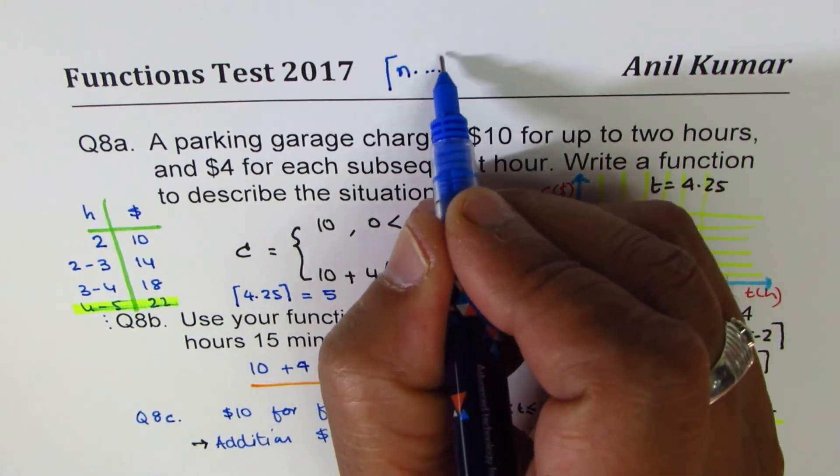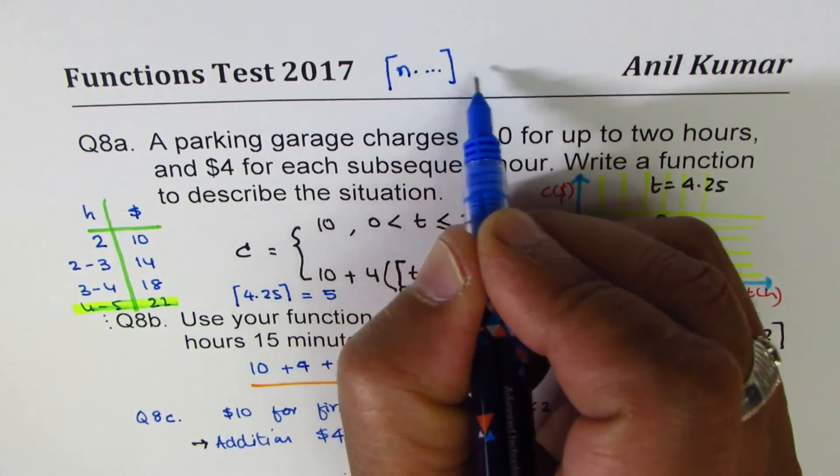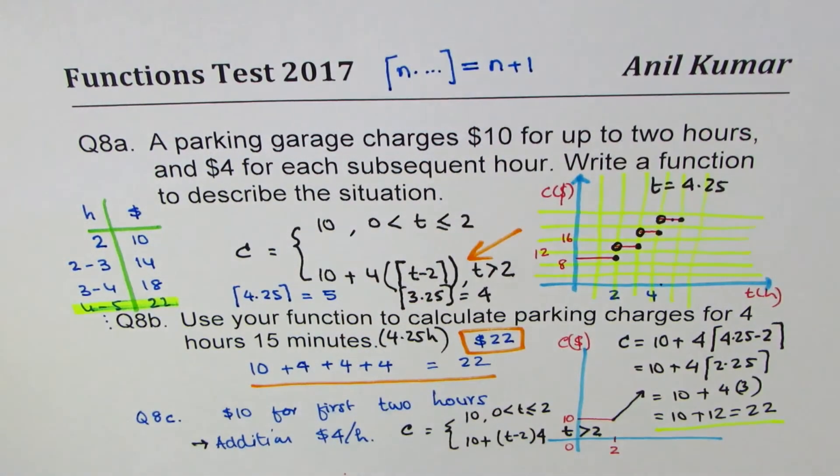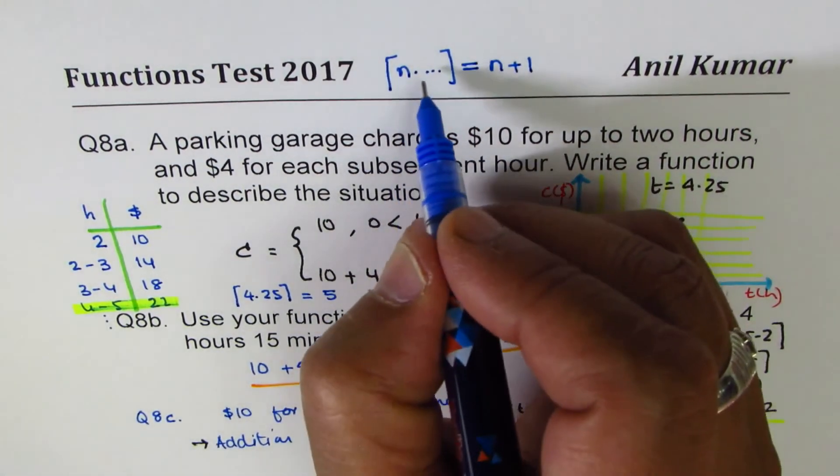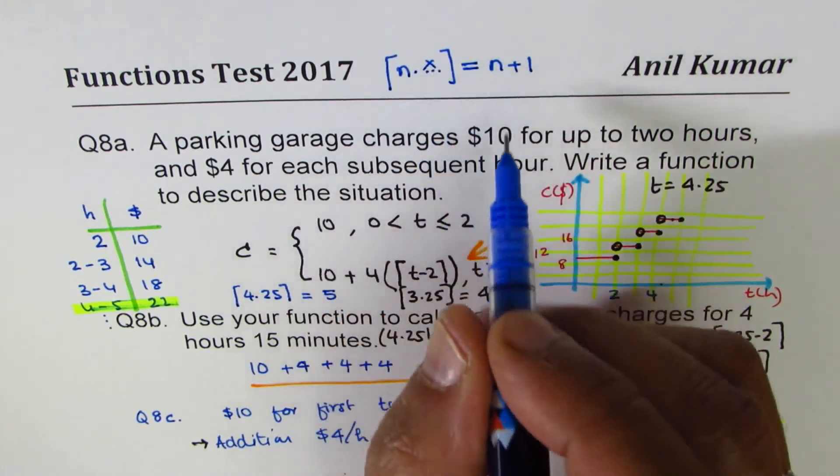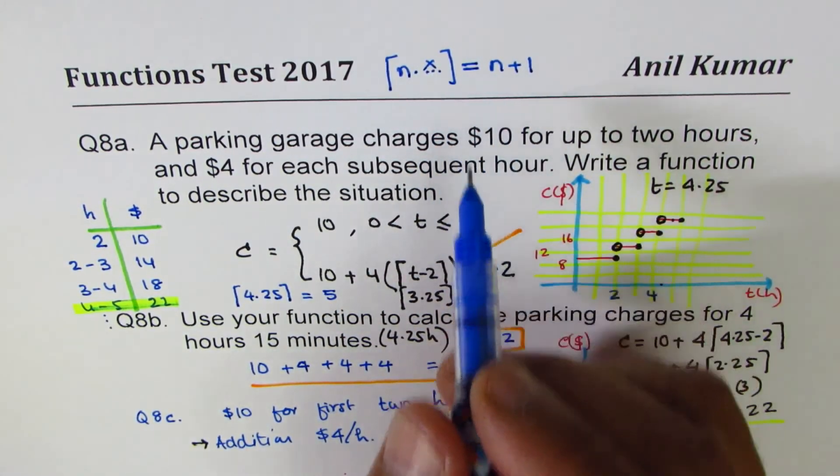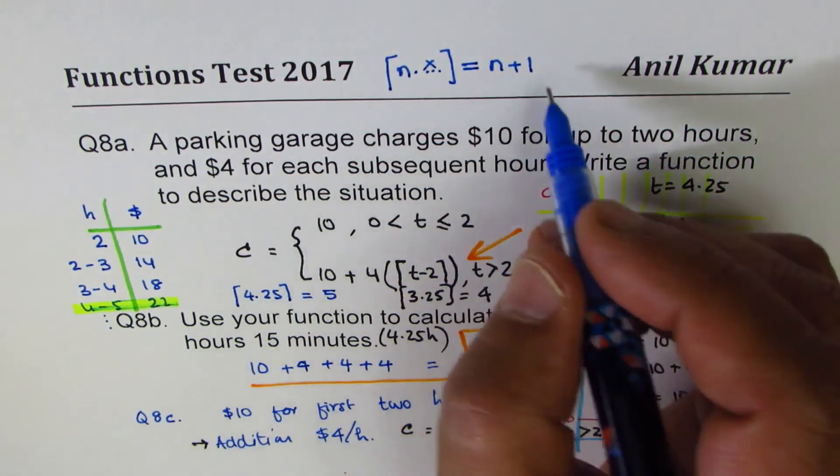So basically, we have used a function which is, if I say n point anything, then it rounds to n plus 1. If you have anything here, n point, let's say anything x, it rounds higher. However, n point 0 is n.